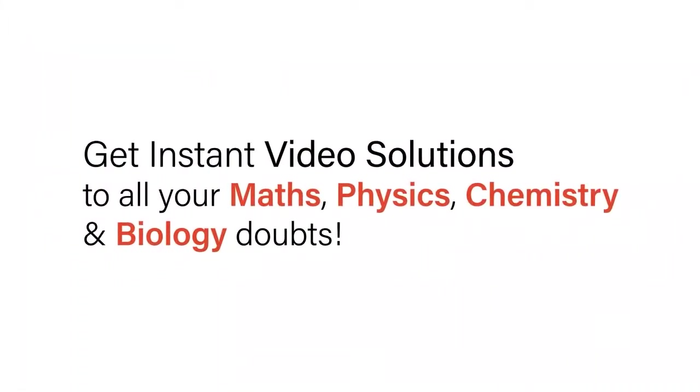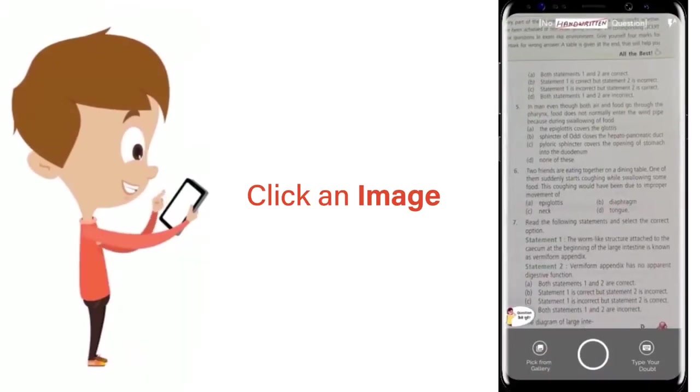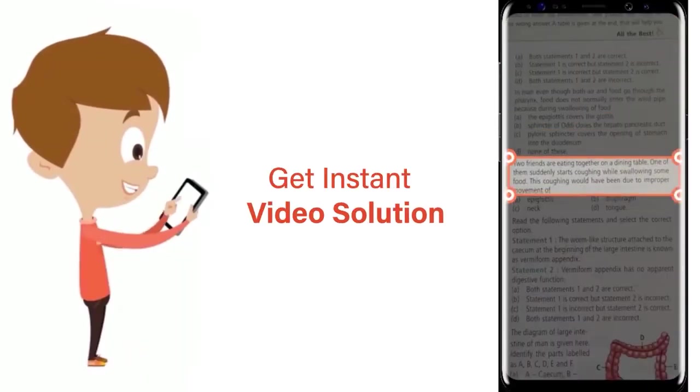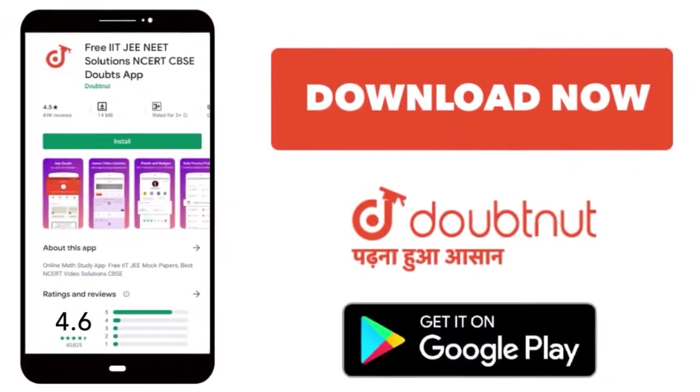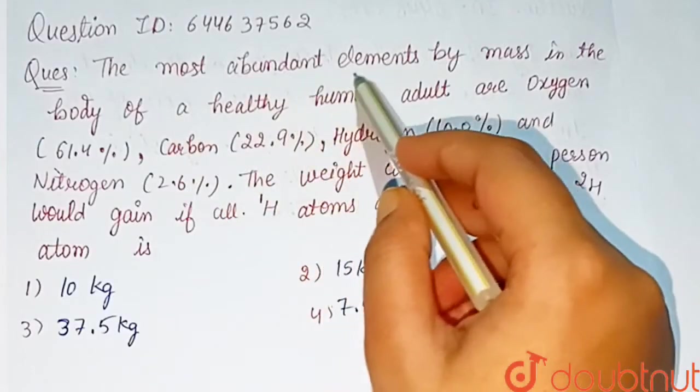With Doubtnet, get instant video solutions to all your math, physics, chemistry, and biology doubts. Just click the image of the question, crop the question, and get instant video solution. Download Doubtnet app today. Our question is: the most abundant